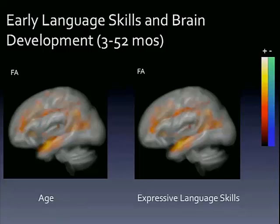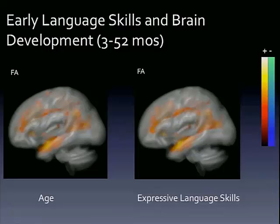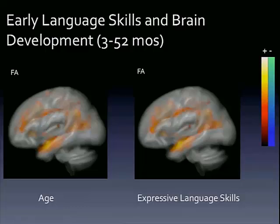Now we looked at the relationship between those early language skills — auditory comprehension and expressive communication as measured by the PLS — and brain development. We wanted to see if there was a relationship between gray and white matter and performance on these measures. What we saw was almost a perfect relationship. Early language skills are relating to brain development in almost exactly the same way as age is relating to brain development. In this really young group, we would expect this given the very strong correlation with age that those early scatter plots showed.